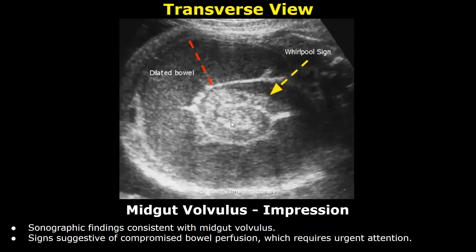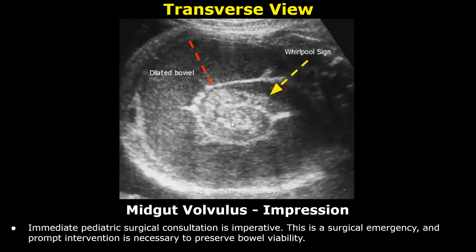Impression: sonographic findings consistent with midgut volvulus, with signs suggestive of compromised bowel perfusion which requires urgent attention. Immediate pediatric surgical consultation is imperative. This is a surgical emergency and prompt intervention is necessary to preserve bowel viability.